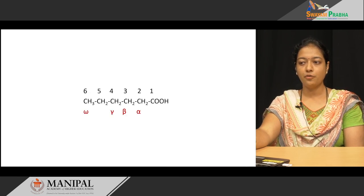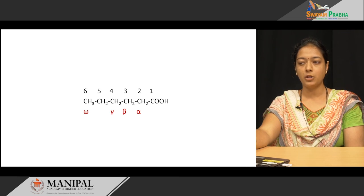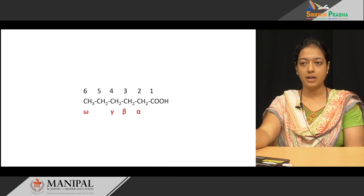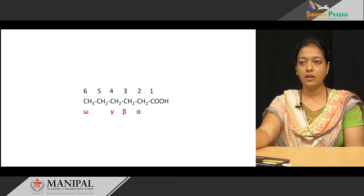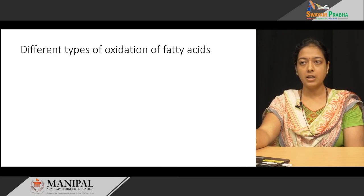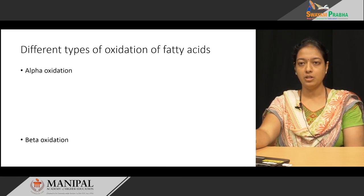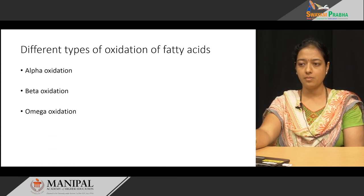This is the structure of a fatty acid. It has a carboxyl group as well as a methyl group. The carbon atom next to the carboxyl group is called the alpha carbon. Next to alpha carbon there is beta, gamma, and so on. If you start numbering from the methyl group, then it is omega 1. Since there are different positions, when fatty acids undergo oxidation there are different types: alpha oxidation, beta oxidation, and omega oxidation. Today we will discuss only the beta oxidation.